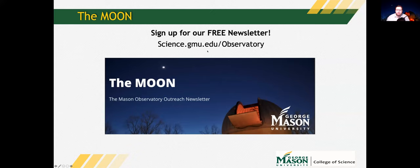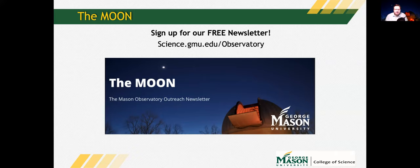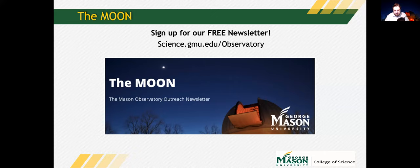I'd like you to sign up for our free newsletter at science.gmu.edu slash observatory called The Moon, the Mason Observatory Outreach Newsletter. We just put out our second edition once a month. The origin of the word month has to do with the moon. Another fun fact: the origins of the days of the week have to do with the planets, moon, and sun. Monday is the moon, Sunday is the sun, Saturday is Saturn.